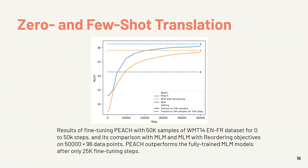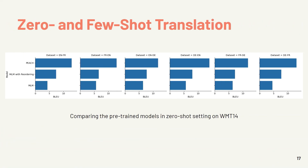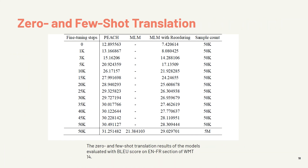We also conducted experiments on zero and few-shot translation. Results of fine-tuning Pitch with 50,000 samples of the WMT14 English-French dataset show that Pitch outperforms fully trained MLM and MLM with reordering models after only 25,000 fine-tuning steps in zero and few-shot translation. As can be seen, in different languages Pitch outperforms other models in the zero-shot setting on WMT14, demonstrating better sample efficiency compared to MLM and MLM with reordering with 50,000 samples after 25,000 steps.